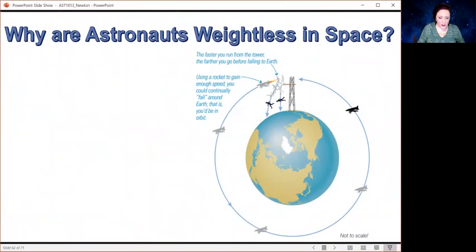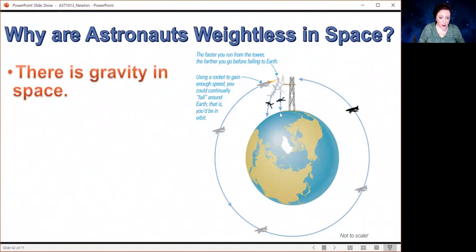So this idea of getting into orbit and circular velocity also explains why astronauts are weightless in space. So here, what we've got is a little platform high above the Earth. And if somebody just steps off it, they're going to drop straight down because there's gravity in space. It's going to pull them straight down to the Earth. If they walk off it, they're going to go a little further away before they've hit the Earth. If they run off it, maybe they get a little bit further.